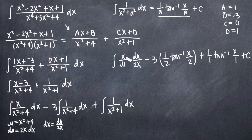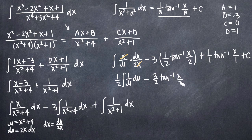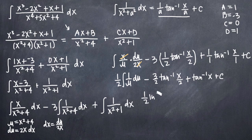We can now integrate 1 over u: the integral of 1 over a variable is the natural log of the absolute value of that variable. So we get 1 half times the natural log of the absolute value of u, minus 3 halves arctan of x over 2, plus arctan of x, plus C.